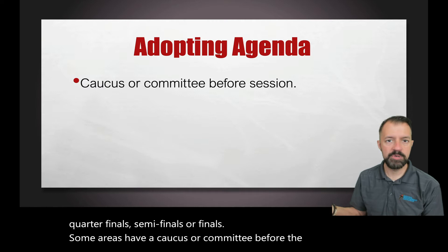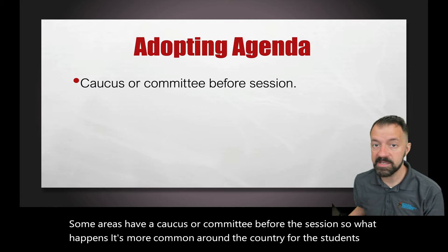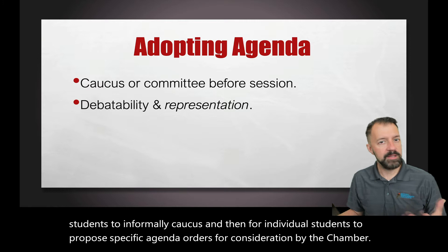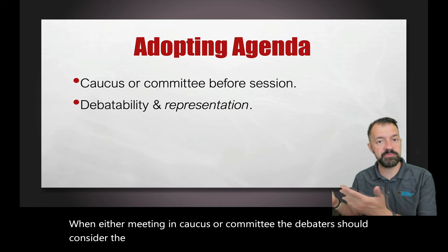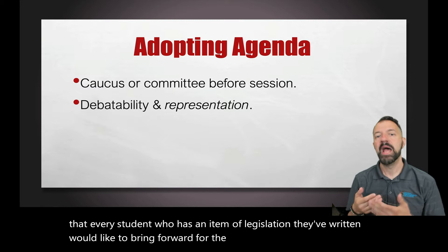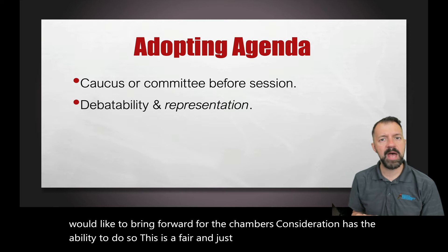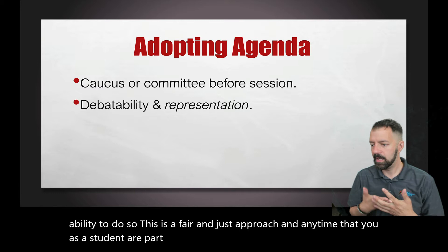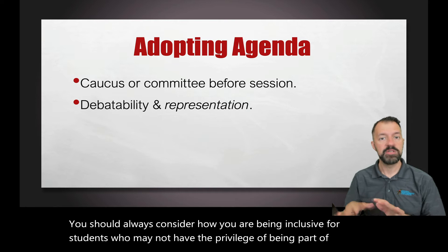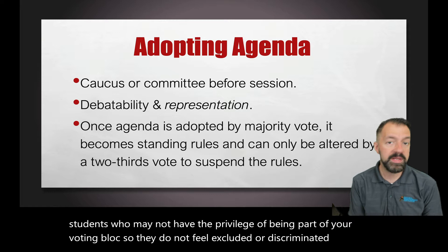Some areas have a caucus or committee before the session, so know what happens. It's more common around the country for students to informally caucus and then for individual students to propose specific agenda orders for consideration by the chamber. When either meeting in caucus or committee, the debaters should consider the debatability as well as representation of authors, so that every student who has an item of legislation they've written and would like to bring forward has the ability to do so. This is a fair and just approach, and any time you're part of a group or a voting block, you should always consider how you are being inclusive for students who may not have the privilege of being part of your voting block, so they do not feel excluded or discriminated against.